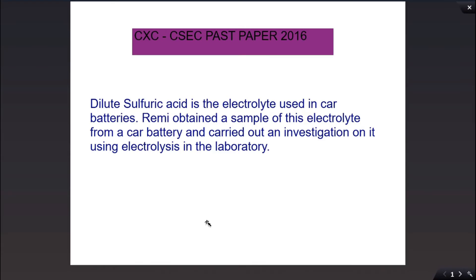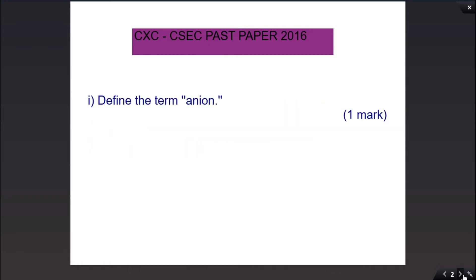Hi everyone and welcome back to another past paper video from the Anime Chem Tutor. Today's past paper is taken from the year 2016, so let us begin. Dilute sulfuric acid is the electrolyte used in car batteries. Remy obtained a sample of this electrolyte from a car battery and carried out an investigation using electrolysis in the laboratory.